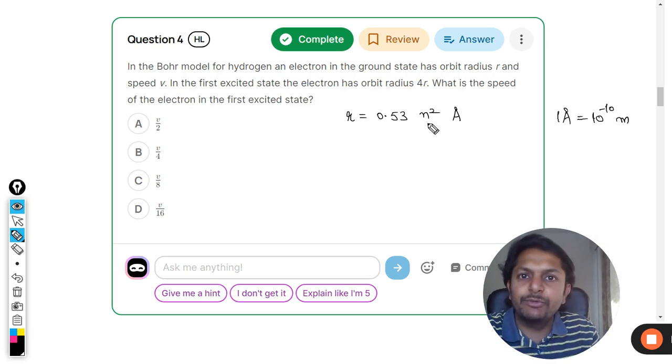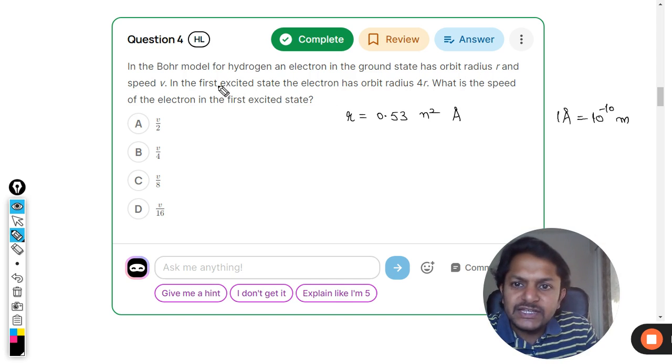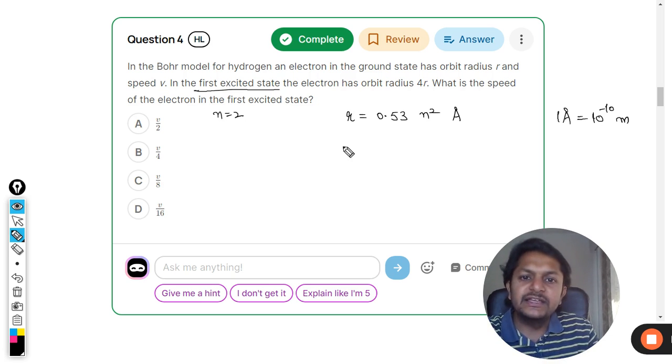It says the first excited state, which means n is equal to 2. So clearly the radius is becoming four times - that explains everything here, isn't it?